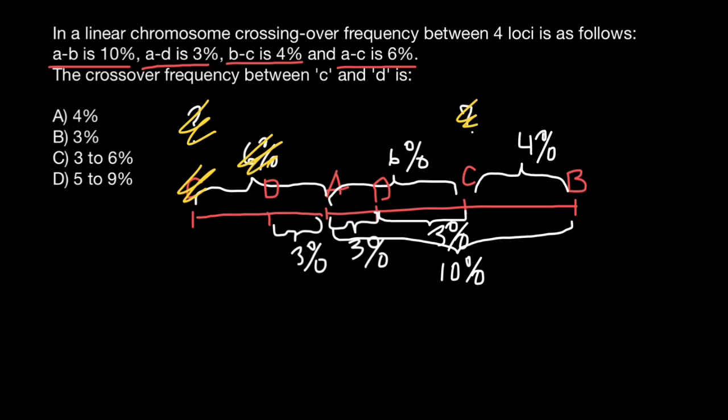But we don't have such an answer here. And if we assume that only one correct answer here, that means that position of the gene D have to be here, and the only answer that would be suitable would be answer B. Between gene C and D, crossing-over frequency have to be 3%.